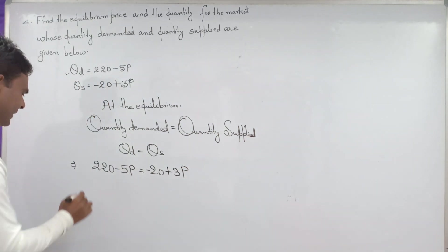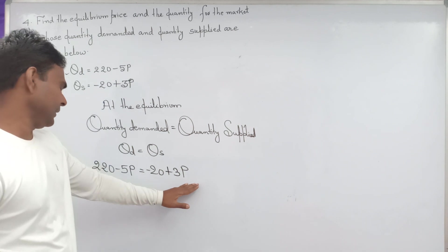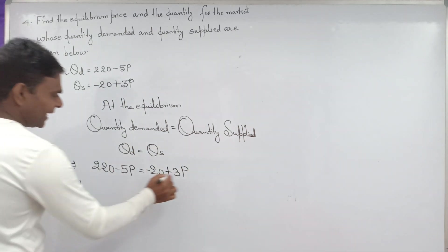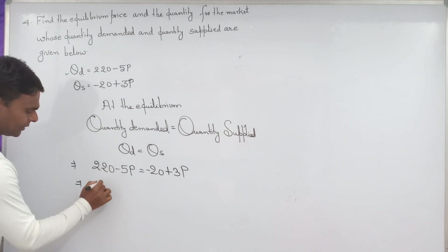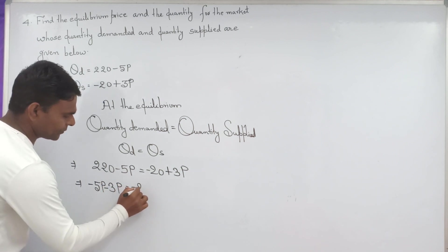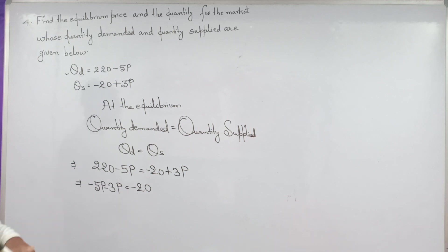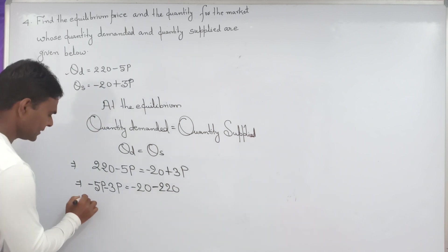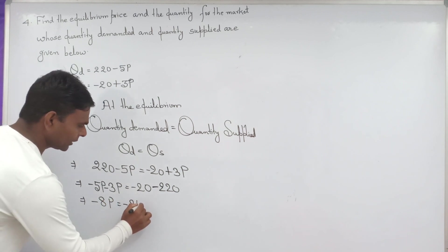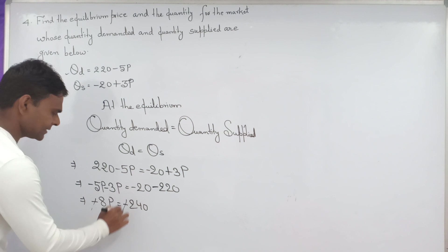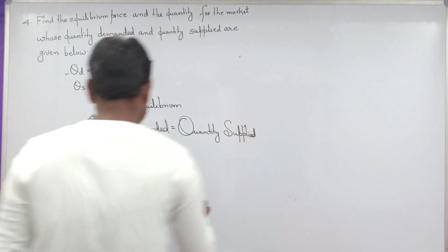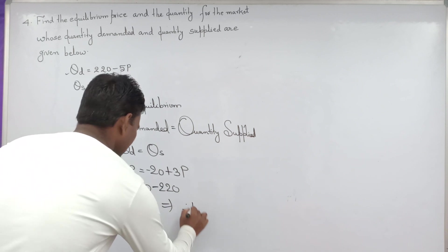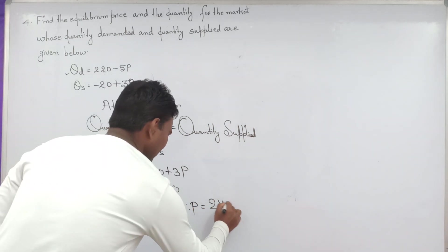Shifting plus 3P in LHS side it become minus 3P. Minus 5P it is already here, minus 3P equal to minus 20. And shifting 220 from LHS side to RHS side it become minus 220. Just minus 8P equal to minus 240.